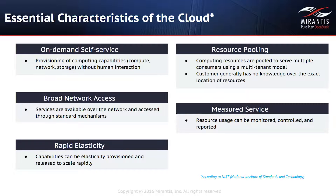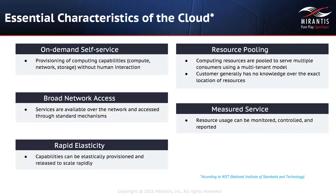Resources, as well as the core functionality of a cloud, are accessed and available over the network, and that leads us to our second characteristic: broad network access. Clients go to a web portal over the network to describe and submit their resource request. Additionally, once a resource such as a server is provisioned, the application running on it can also be exposed and available over the network. So the network is crucial to ensure the cloud is available for provisioning, deprovisioning, and accessing provisioned resources afterwards.